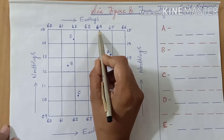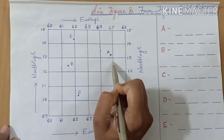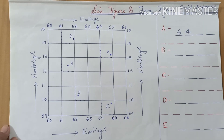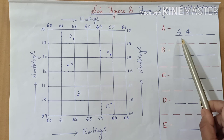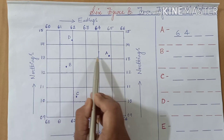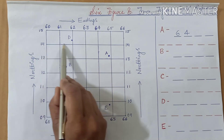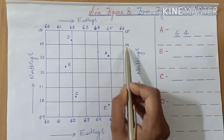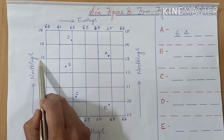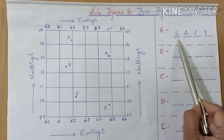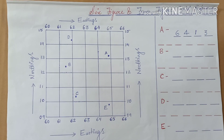So for place A, the easting is 64 — it is between 64 and 65 and we take the lesser value. Now for the next two figures, we will see the northings. For place A, the northings are between 13 and 14. We take the lesser value, which is 13. So the first two figures are the eastings and the second two figures are the northings. This is how we find out the four figure grid reference of a place.